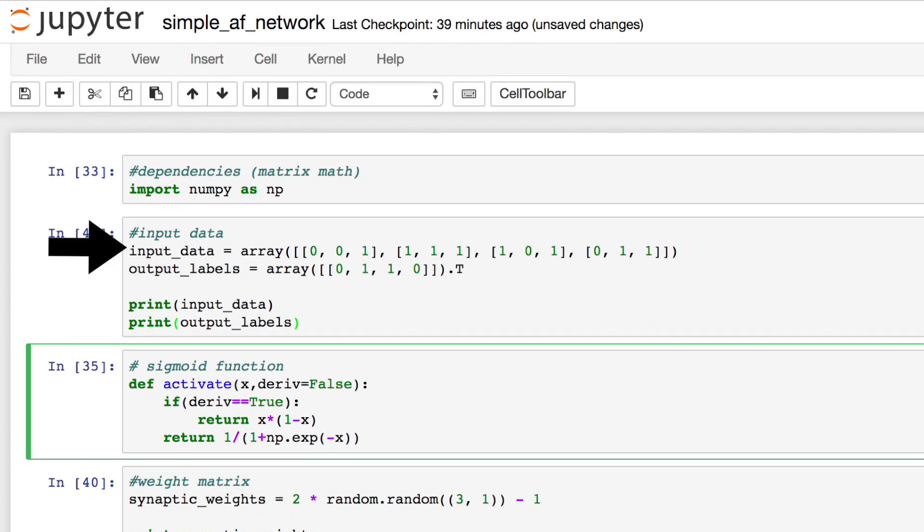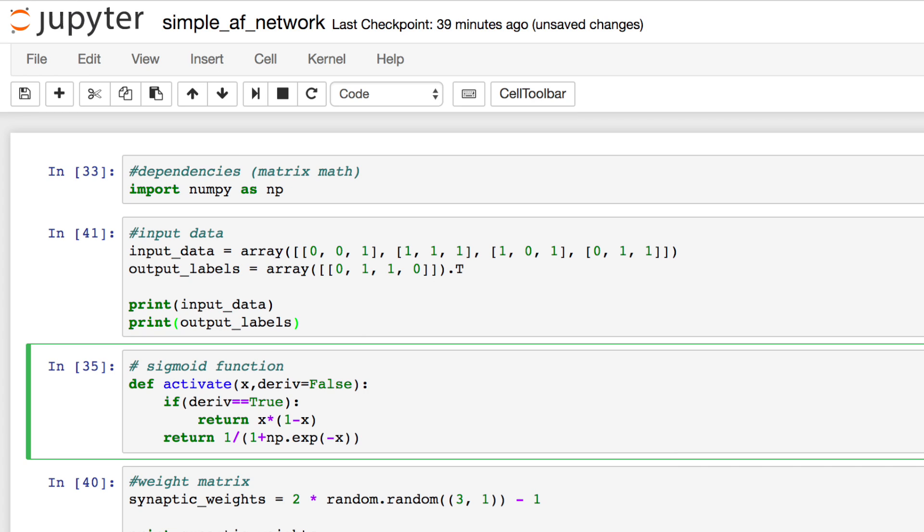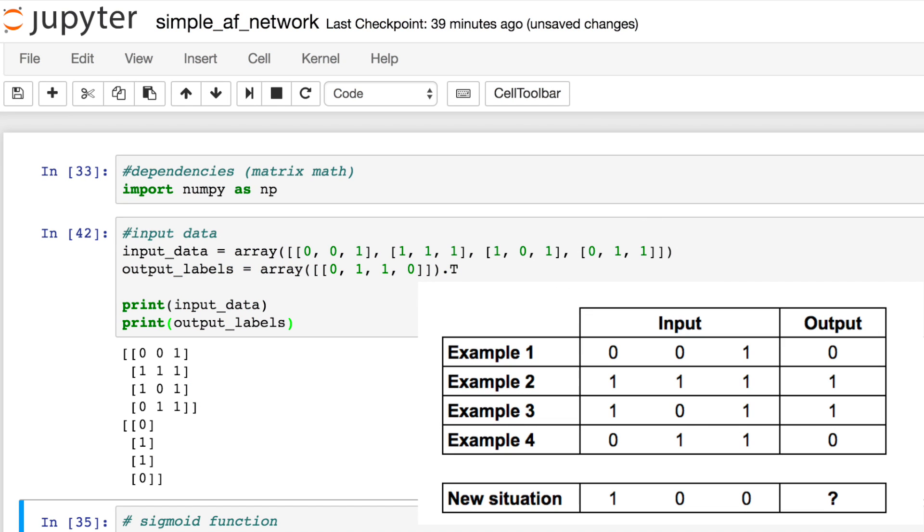Alright, so given some input data x and some associated output labels y, there exists a function that represents the mapping between them. Our goal is to learn that function, so we can then input some random x value and it will predict its associated y value. This input data is represented as a matrix, where each row is a different data point and each column is one of its features, just arbitrary ones and zeros in our case.